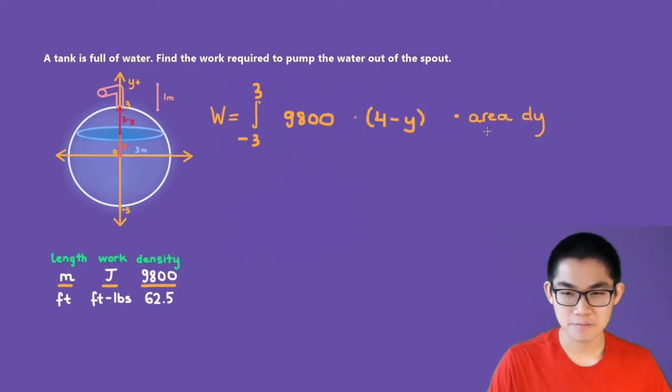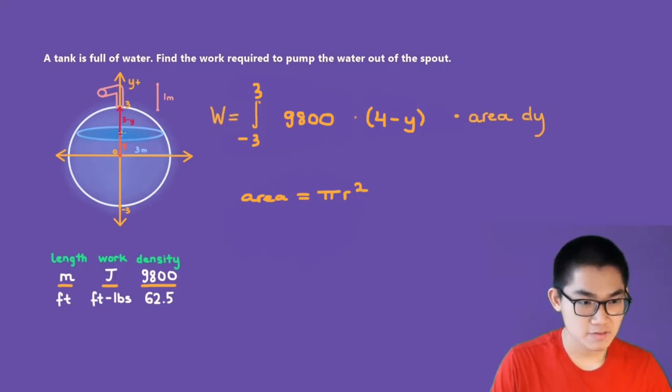How about the area? Well, the area of our layer of water is equal to pi times the radius to the power of two. And the radius is from here to here, and we can also call it X. So instead of writing R, I'm going to write it in terms of X: pi times X to the power of two.